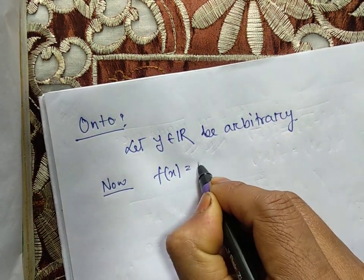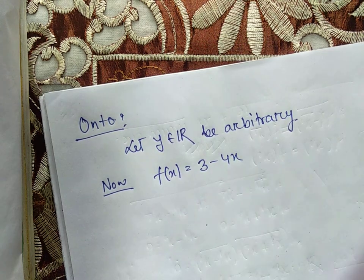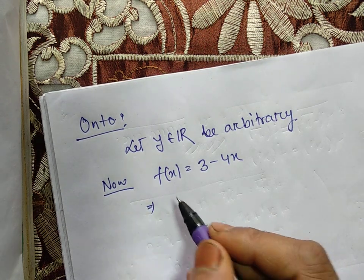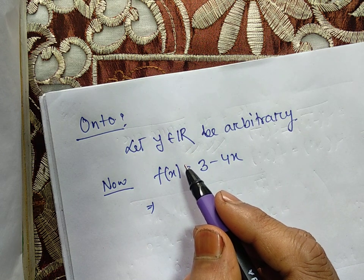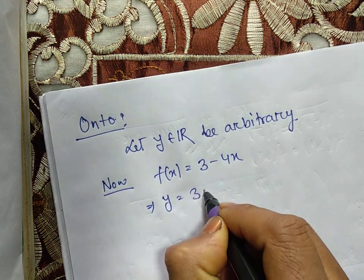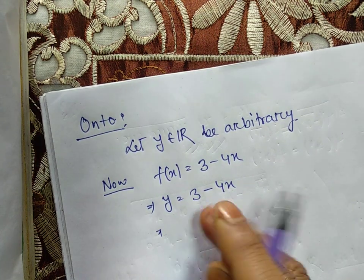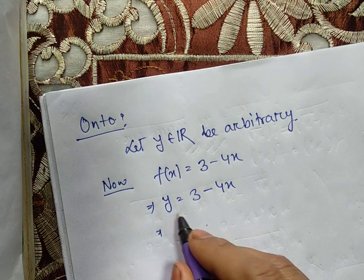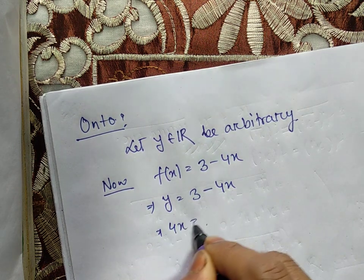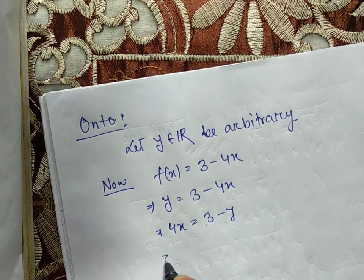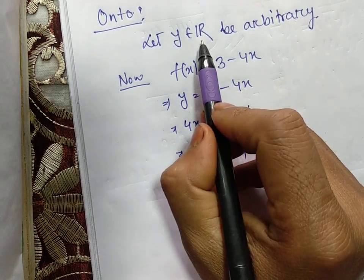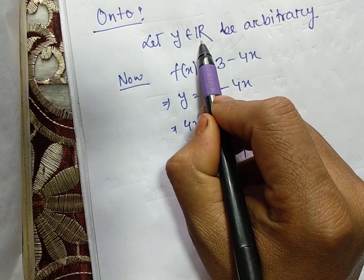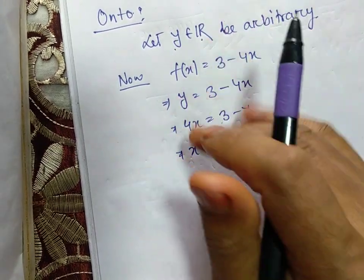Now, f(x) = 3 - 4x is already given in the question. We discussed in the last class: whenever you have to show that a function is onto or not, we write f(x) = y and get an expression. We rearrange the expression to get the value of x exactly. So 4x = 3 - y, therefore x = (3 - y)/4.